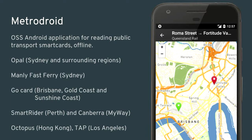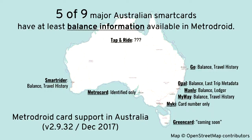I wrote a program called MetroDroid, which reads public transit smart cards offline. I implemented support for five cards in eastern Australia: Sydney's Opal and Manly Fast Ferry cards, Brisbane's Go card, Perth's SmartRider card, and Canberra's MyWay card. I also implemented support for Hong Kong's Octopus card and the Los Angeles TAP card. This is distributed on the Google Play Store and F-Droid. I can now read five out of nine of the major cards in Australia, at least the balance information.